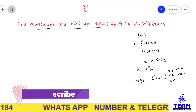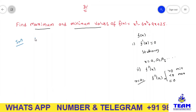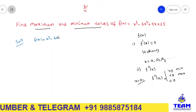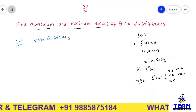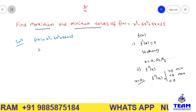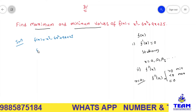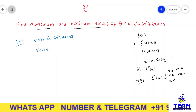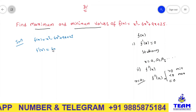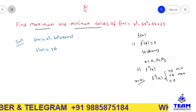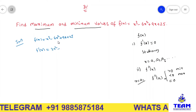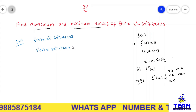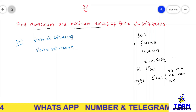Coming to the solution: the given function is f of x equal to x cube minus 6x square plus 9x plus 25, which is an algebraic function. We need to find the stationary values, so we differentiate f of x with respect to x. The derivative gives f dash of x equal to 3x square minus 12x plus 9.